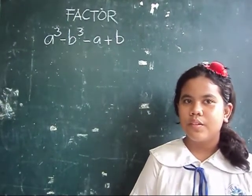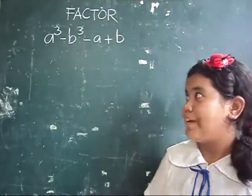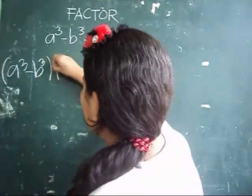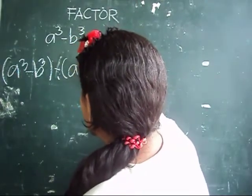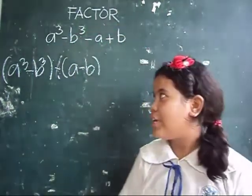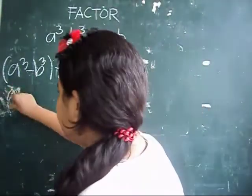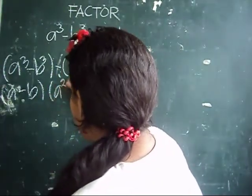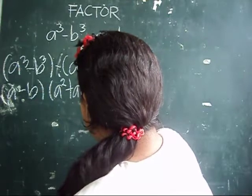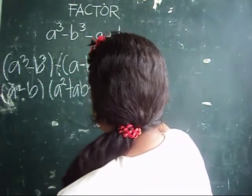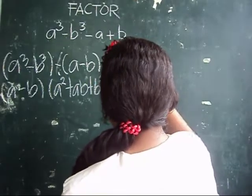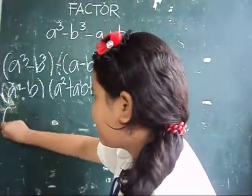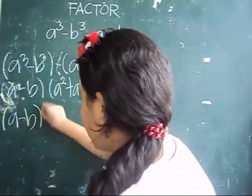Factor a cubed minus b cubed minus a plus b. Factor it by grouping. The factors of a cubed minus b cubed are... Since a minus b is common, factor out a minus b. The resulting factor is a squared plus ab plus b squared minus 1.